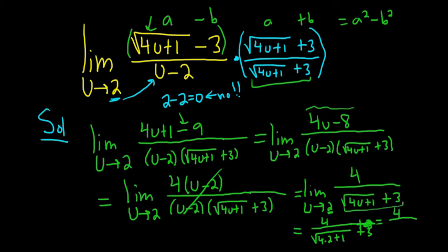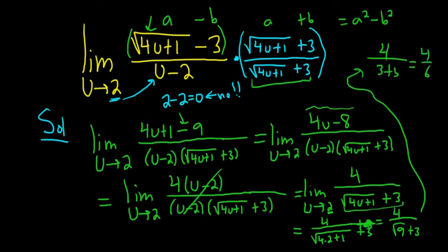4 times 2 is 8, 8 plus 1 is 9, so you get the square root of 9 plus 3. The square root of 9 is 3, so 3 plus 3. We get 4 over 6, so we end up with 2 over 3. And that's the final answer. Kind of a harder problem. I hope that made sense.